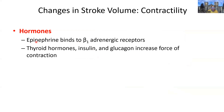Regarding hormones: epinephrine binding to beta-1 receptors produces the same four effects as the sympathetic nervous system, just in hormonal form. Thyroid hormone can also increase contractility because it increases the overall metabolic rate of cells. As described in the endocrine system, insulin and glucagon can also increase heart rate and force of contraction.